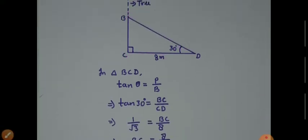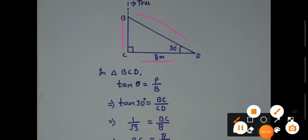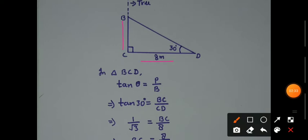Look at triangle BCD. The base CD is 8 meters. First we have to find BC.